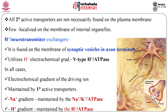Not all secondary active transporters are necessarily found on the plasma membrane — they are also present on the membranes of internal organelles. For example, H+/neurotransmitter exchangers are found in the membrane of synaptic vesicles in axon terminals. They utilize the H+ electrochemical gradient, that is the proton electromotive force established by V-type H+-ATPase, to facilitate the uphill transport of neurotransmitters into the lumen of the synaptic vesicle. In all cases, the electrochemical gradient of the driving ion is maintained by primary active transporters. The Na+ gradient across the plasma membrane is maintained by Na+/K+-ATPase, and the proton gradient across the synaptic vesicle membrane is maintained by H+-ATPase.